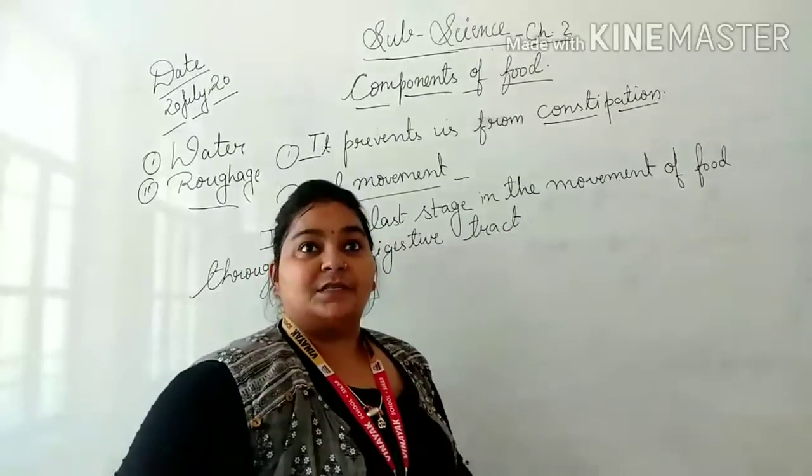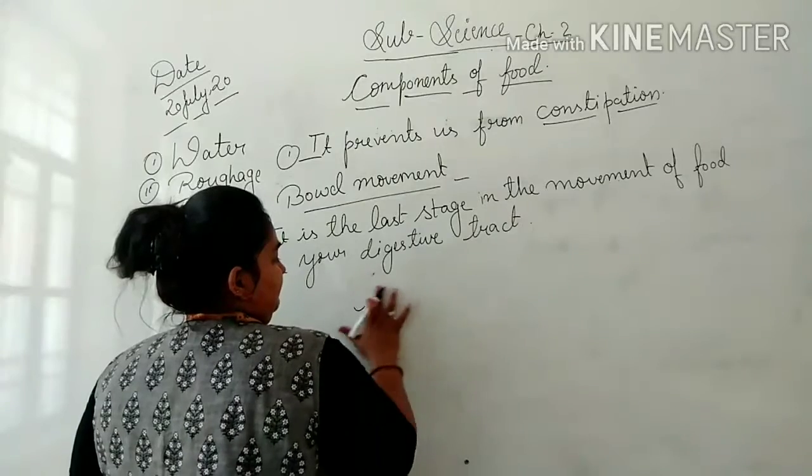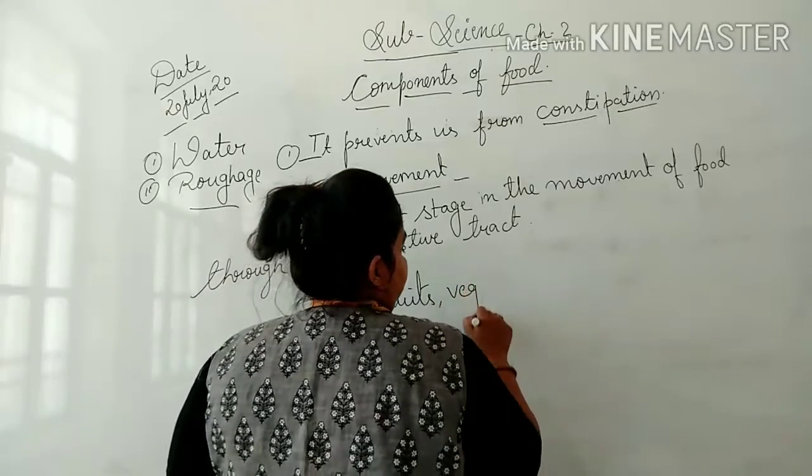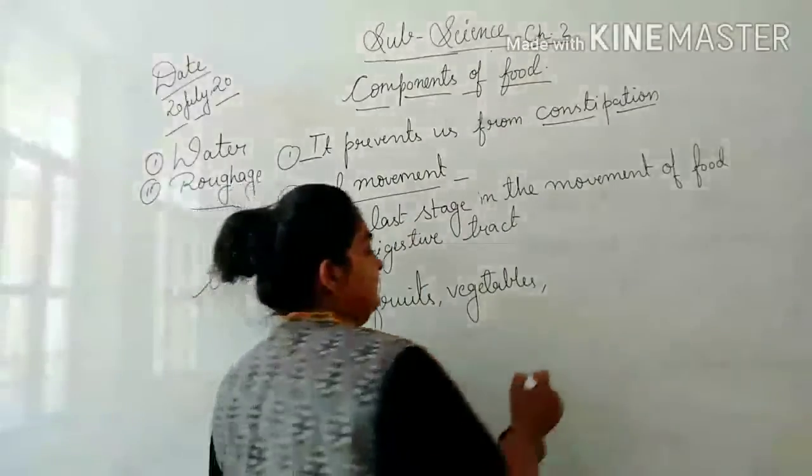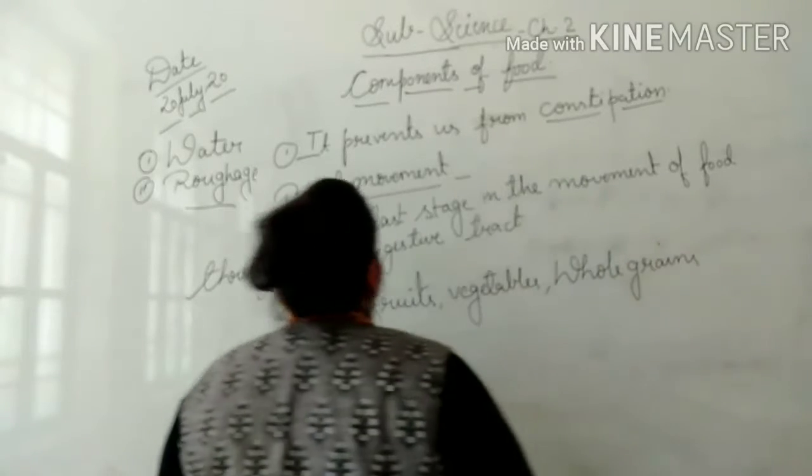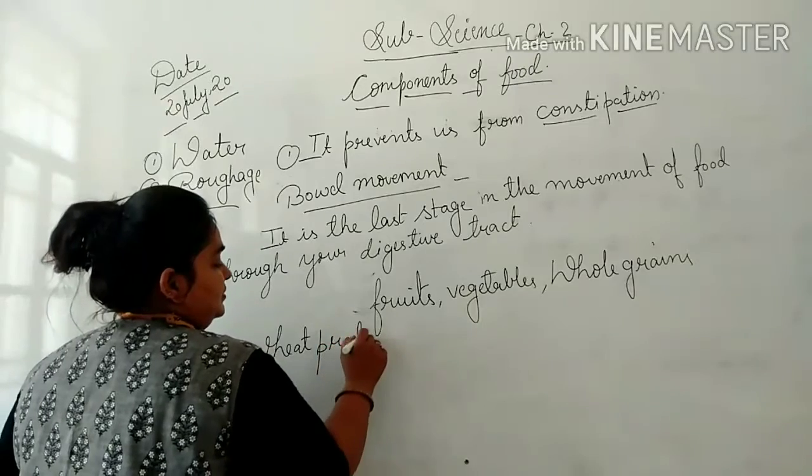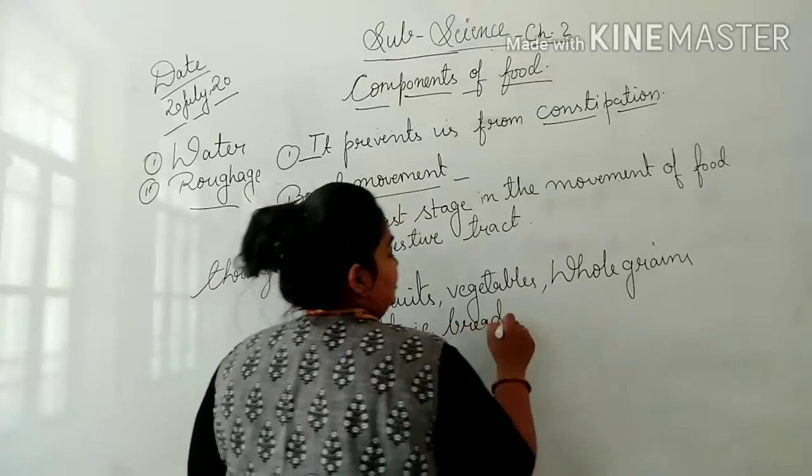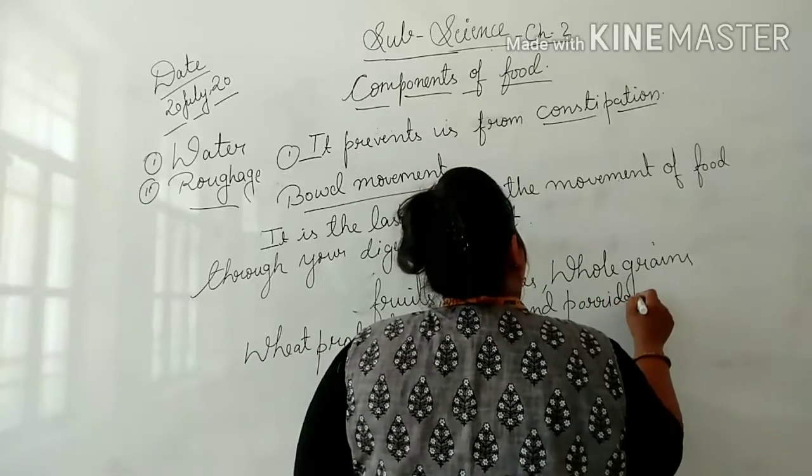Now, what are the sources of roughage? How we can get sources? So, the best thing is that you should have fruits, vegetables, in adequate amount you should have whole grains, wheat products, that is bread and porridge.